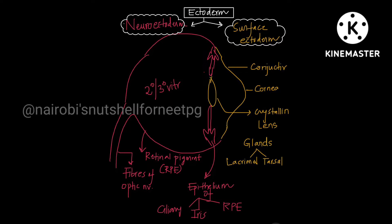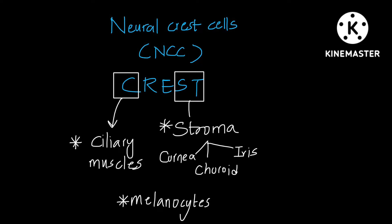Neuroectoderm is about the inside of the eye — the vitreous, retinal pigment epithelium, and from there the optic nerve fibers. So the neural part includes fibers of the optic nerve, retinal pigment epithelium, secondary and tertiary vitreous, and the ciliary body and iris epithelium. Epithelium of ciliary body, iris, and retinal pigment epithelium — three different types of epithelium — and secondary/tertiary vitreous, and fibers of optic nerve are all from neuroectoderm. This completes the ectodermal part.